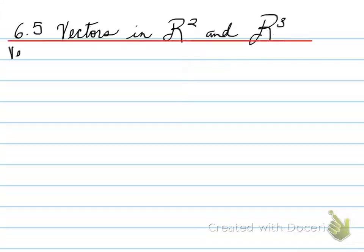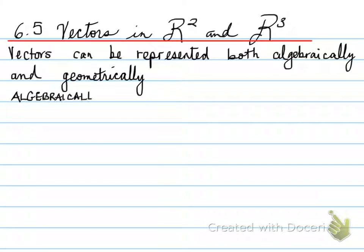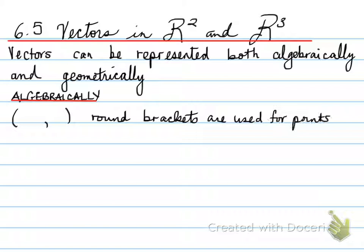All right, 6.5 vectors in two-space and three-space. Vectors can be represented both algebraically and geometrically. Algebraically, we write vectors and points a little bit differently so that you can distinguish the two.